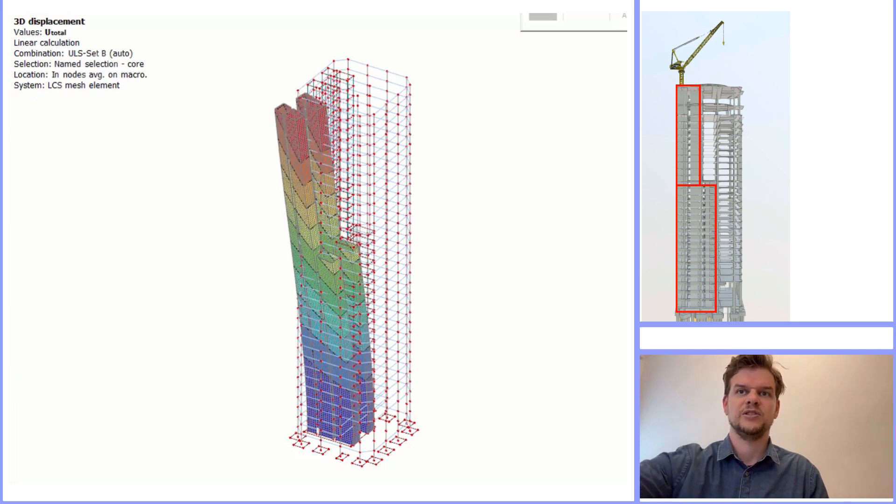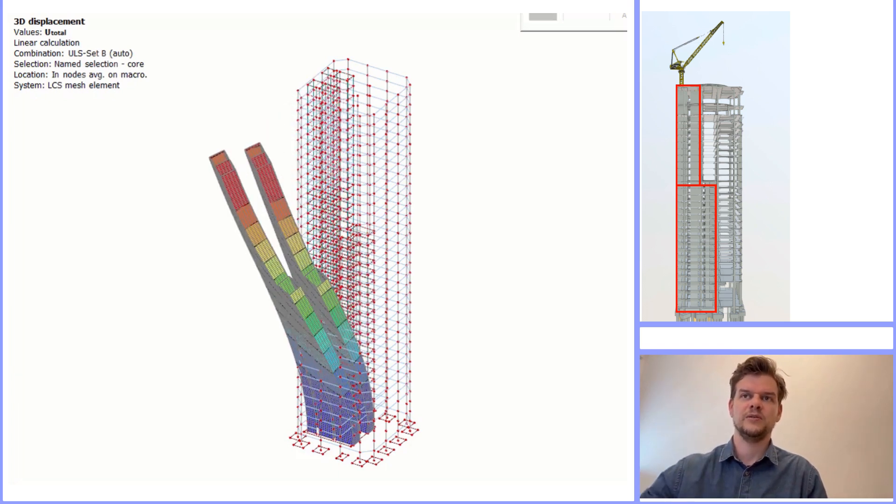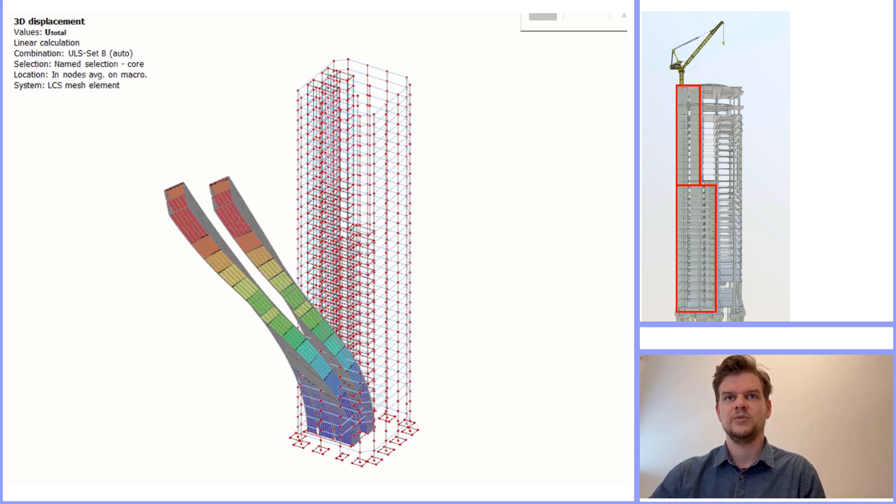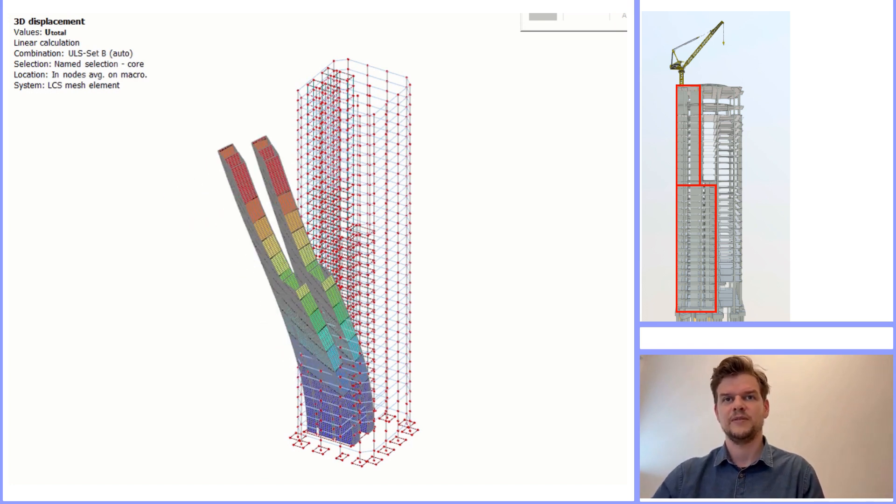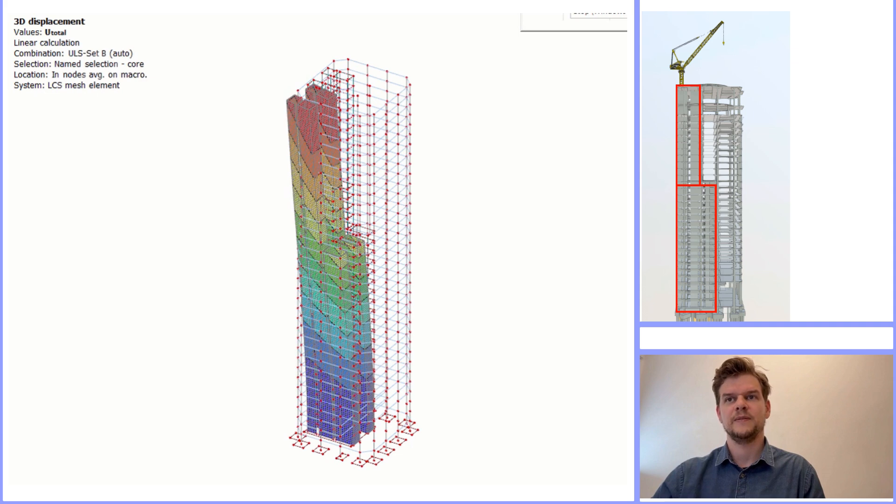A 30-story building gone in just eight seconds. Was it weak concrete? A failed column? Maybe. But the real cause was something hidden, something most people overlook: torsion.